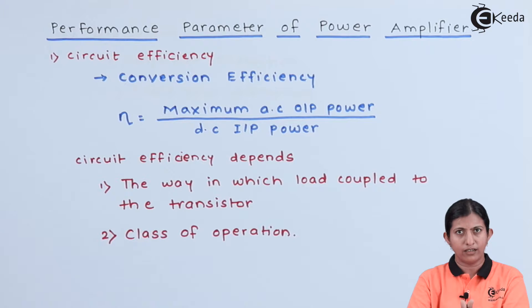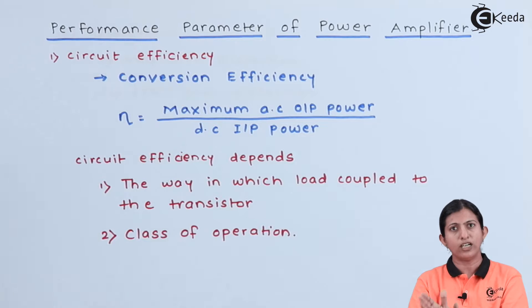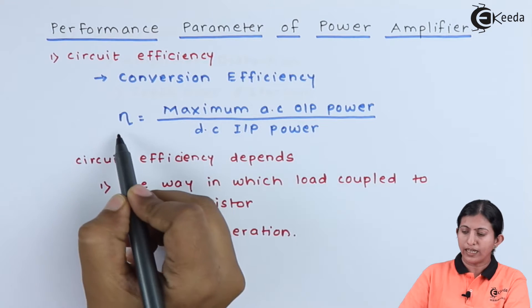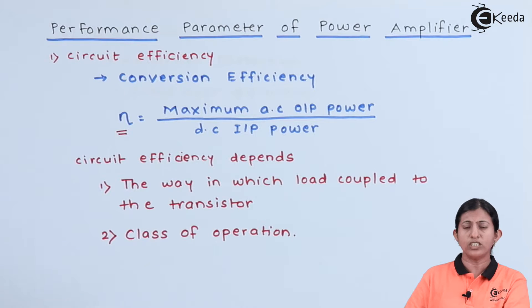The ability of the amplifier to take the DC power and convert it into useful AC power which is ultimately supplied to the load is called conversion efficiency or circuit efficiency. The conversion or circuit efficiency is denoted by eta (η), which is the ratio of maximum AC output power to the DC input power.